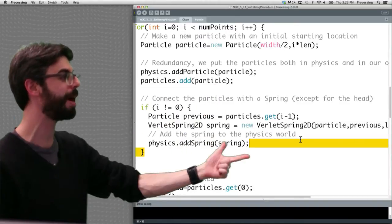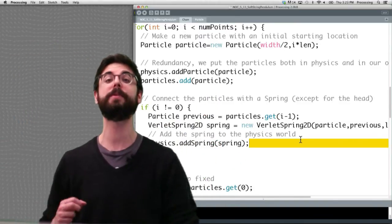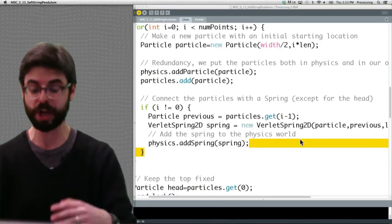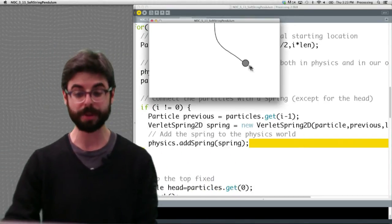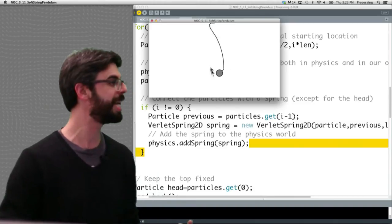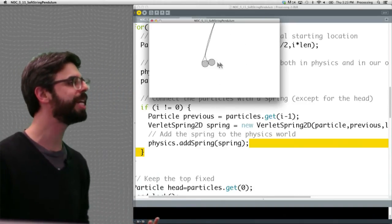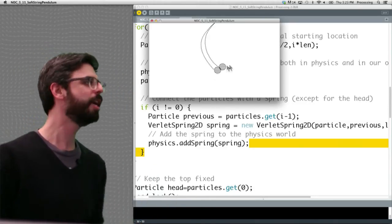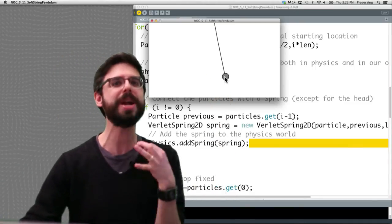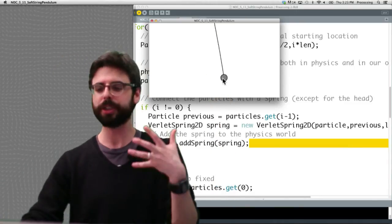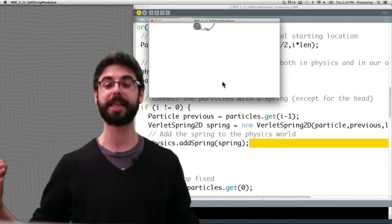As we count through this ArrayList, i is our current particle, i-1 is our previous particle. Make a spring between current and previous. When we draw them as a connected series of lines, we get this nice stringy looking thing.